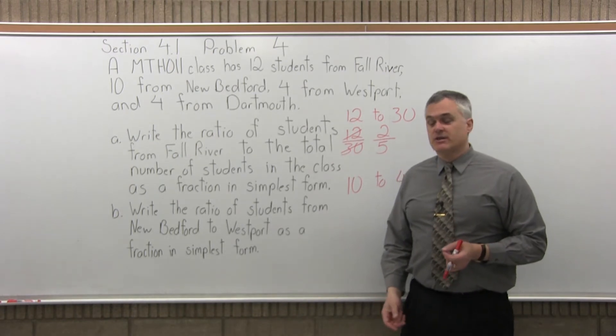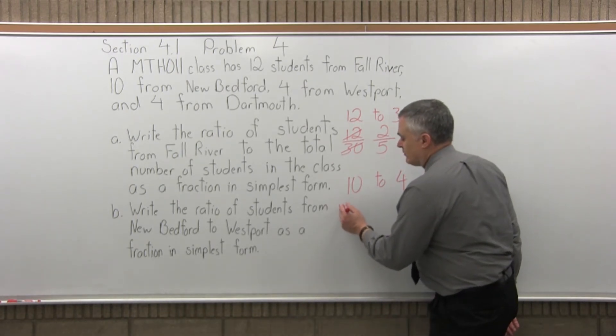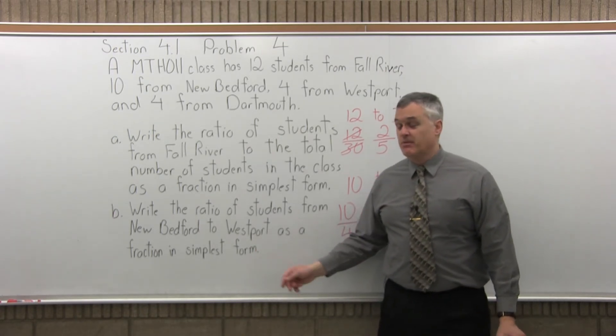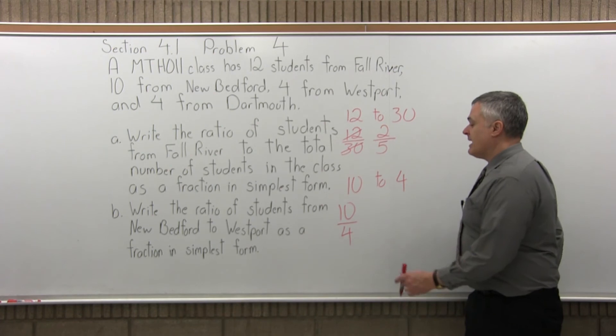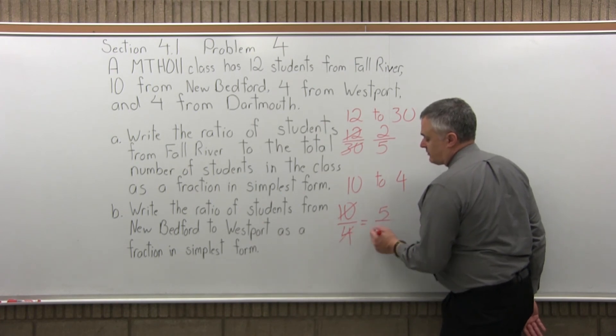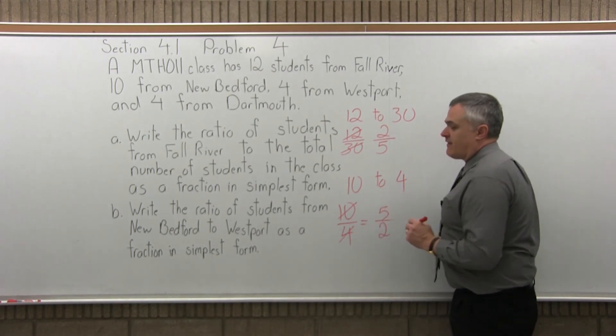So that's the ratio. Let's now write that as a fraction. 10 to 4 would be 10 over 4. And if it didn't mention the part about being in simplest form, I could stop here. But to get it in simplest form, I can reduce this. 2 divides into both evenly. 2 divides into 10 five times, and 2 divides into 4 two times. So 5 over 2.